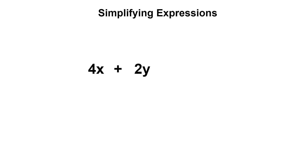In this video I'd like to show you how to simplify expressions. In our first example we have the expression 4x plus 2y plus 3x. To simplify expressions means to write the expression in a more simple way, which is done by combining like terms. So how do we know if terms are like?